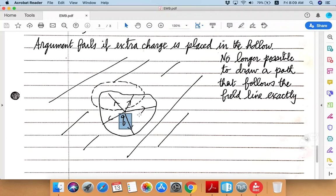So that implies that the previous argument had a loophole or weakness that this new situation is exploiting. So what is that loophole? Well, in this case, it's pretty much impossible to make a path that exactly follows the field line. So field line is emanating outward like this.